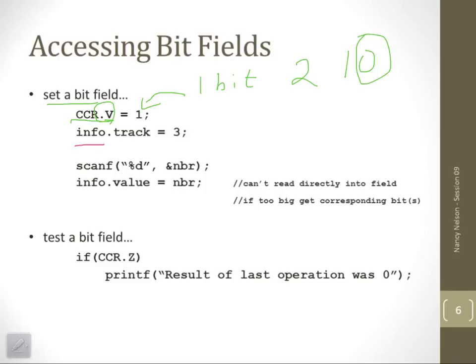For our other bit field that we set up, we had track. So we have the name of the variable, the field with the dot operator, and we're assigning the value 3 to that. It's just like assigning any field in any structure.